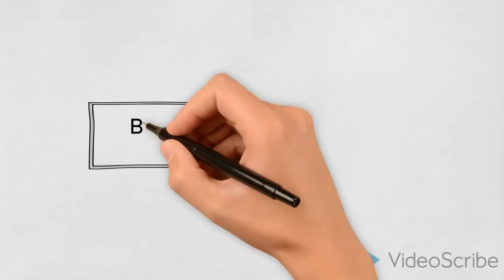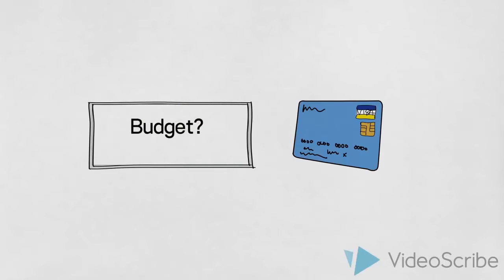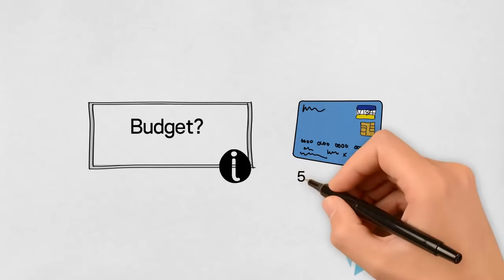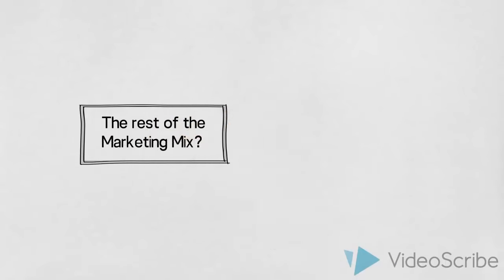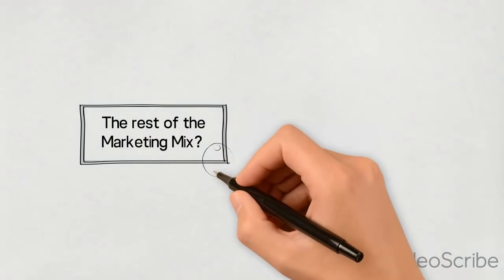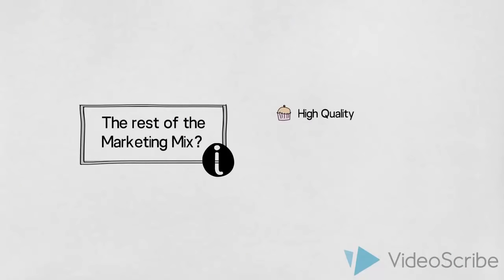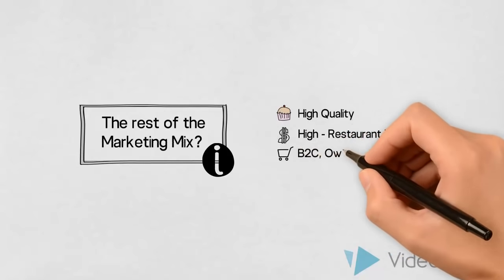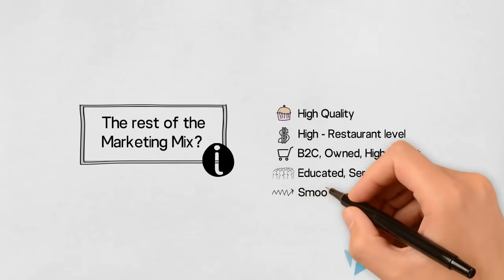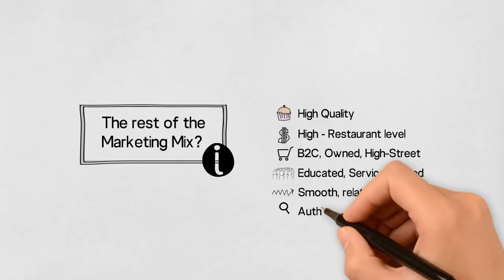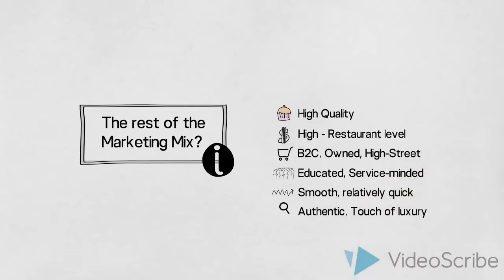We are also keen on knowing the budget available to us. Let us say that the French Cafe has allocated 5,000 euros for this campaign. Knowledge about the rest of the marketing mix is also important. The French Cafe serves high-quality cakes and desserts created by educated confectioners, prices are at the level of high-end restaurants, the cafe is run by the owner himself and it is located in a busy shopping area of the city. The service and process is of a high standard and the interior matches. This will also guide us in the design of the integrated marketing campaign.